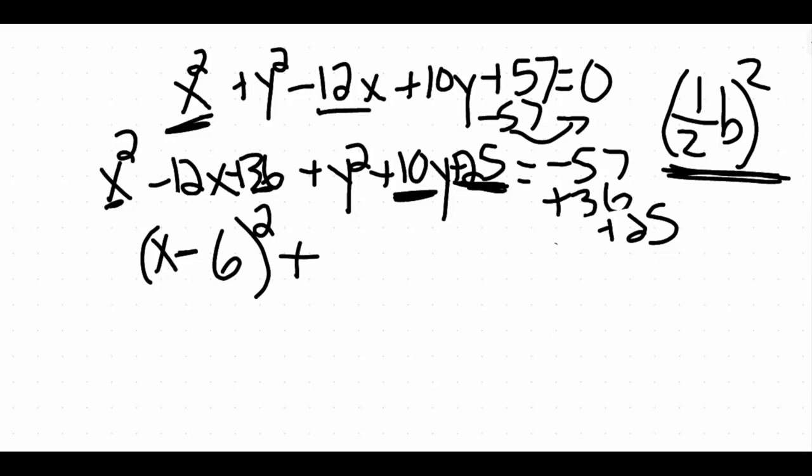And we would do the same thing with our y terms. So if we're looking at our y terms here, we also want to factor this one as well. And it should also factor nice and perfectly for us. y times y gets this y squared and 5 times 5 gets this 25. Everything is positive there, so my factors here are also positive. And we can't forget to raise that to the second power. And this is all going to equal to, well we need to do a little bit of calculation here with the numbers that we have on the right hand side of the equation. So we had a negative 57 and we're going to add 36 to that which gets us a negative 31. And then we're going to add 25 to it which gets us a 4. So negative 57 plus 36 plus 25 gets us a 4.